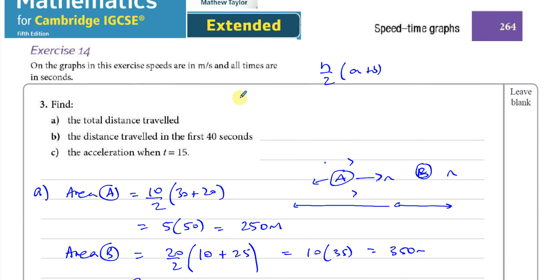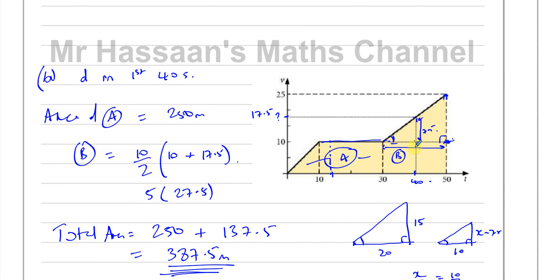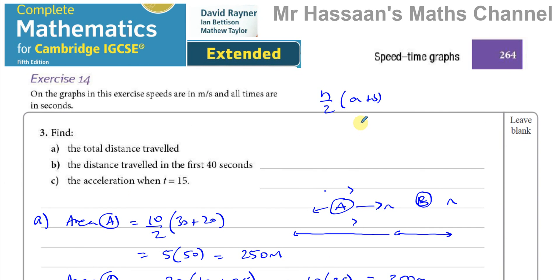That concludes the question. The key technique was using similarity to find the distance at t = 40 seconds. For other questions from chapter seven on graphs, check the playlist. You can also find IGCSE past paper speed-time graph questions in the playlist. Subscribe to the channel and find all my IGCSE and A-level material via the links in the description. Thank you for watching!